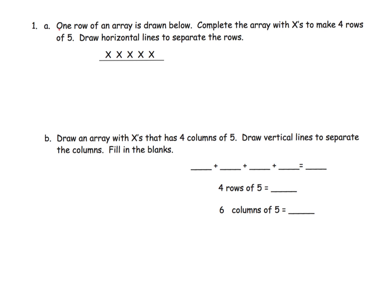We're told that we have one row of an array that's already been drawn, and then we're supposed to complete the array with X's to make four rows of five. So we have one row of five, so we need two, three, four. We need four rows, so there's one row and here's a second row of five.